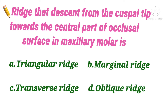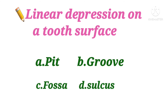The next question: the linear depression on a tooth surface is — option A pit, B groove, C fossa, D sulcus. The answer is option B, groove, because pits are small pinpoint depressions, fossa is an irregular depression, and sulcus is a V-shaped depression or valley on the surface of a tooth. So the only linear depression is a groove.